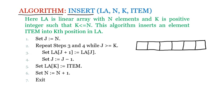We are assuming this is the array, and we know that the array index starts with one in this algorithm — positions one, two, three, four, five, and six, meaning six elements can be stored. We are assuming five elements are already present: seven, three, eight, two, and six. These five elements are already present inside the array.